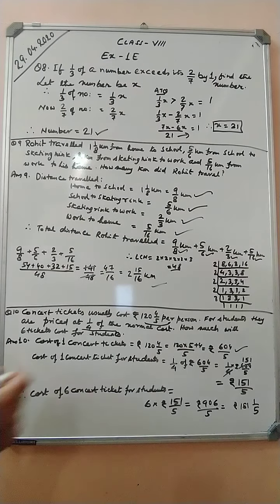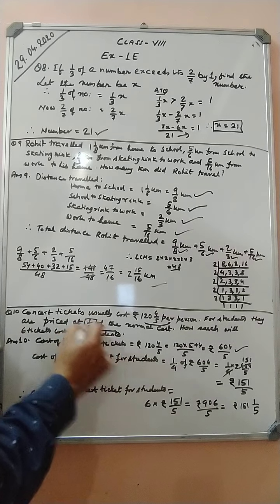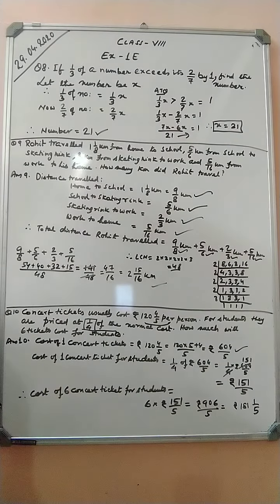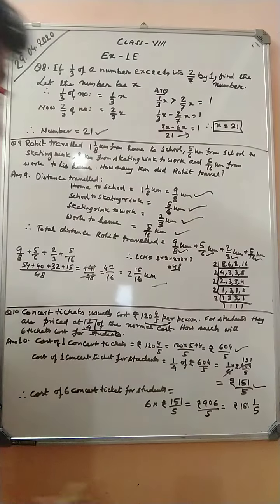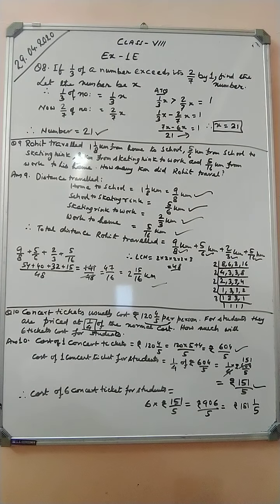So, LCM of 3 and 7 is 21. 7 times 7 minus 3 times 6 is 7x minus 6x, which is x, and 21 is cross multiplied with 1. So x equal to 21. The number is 21.